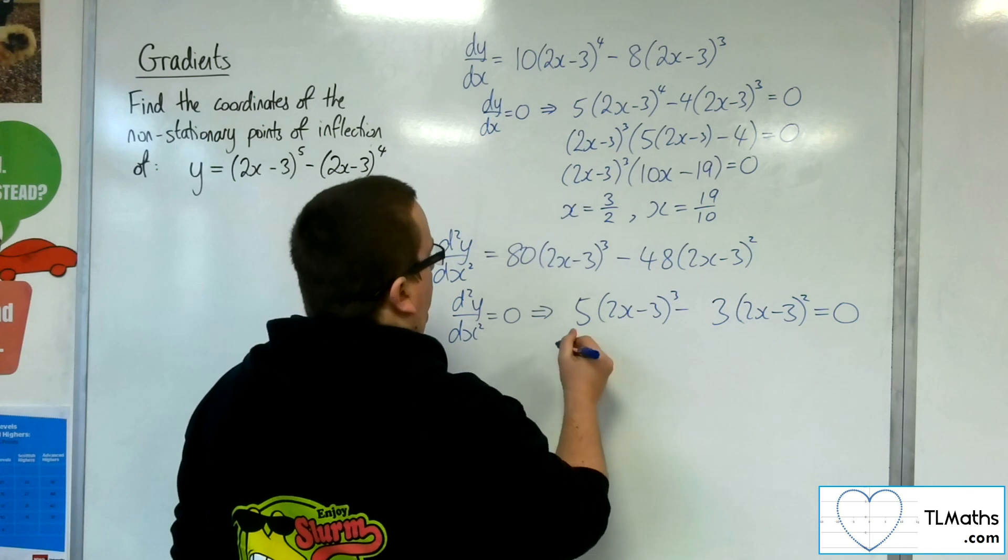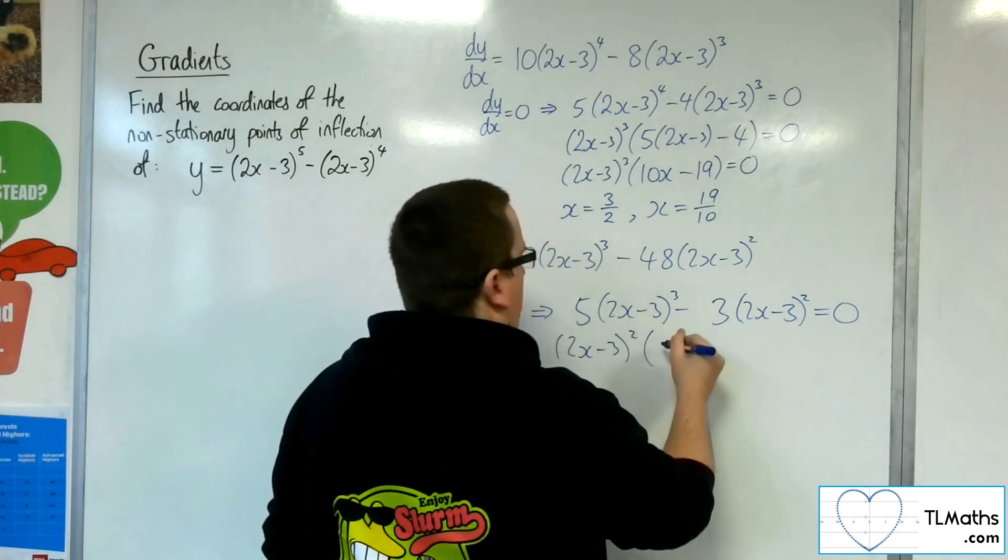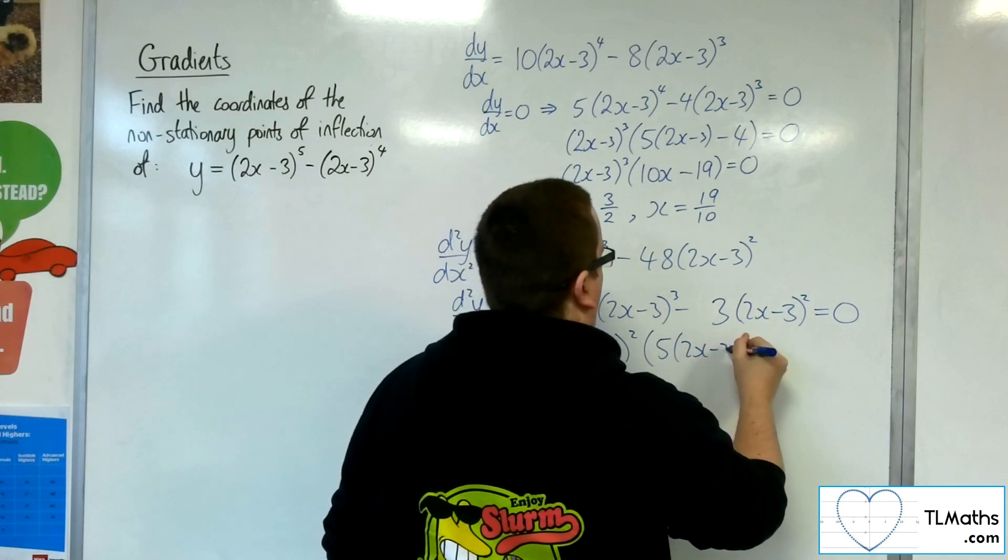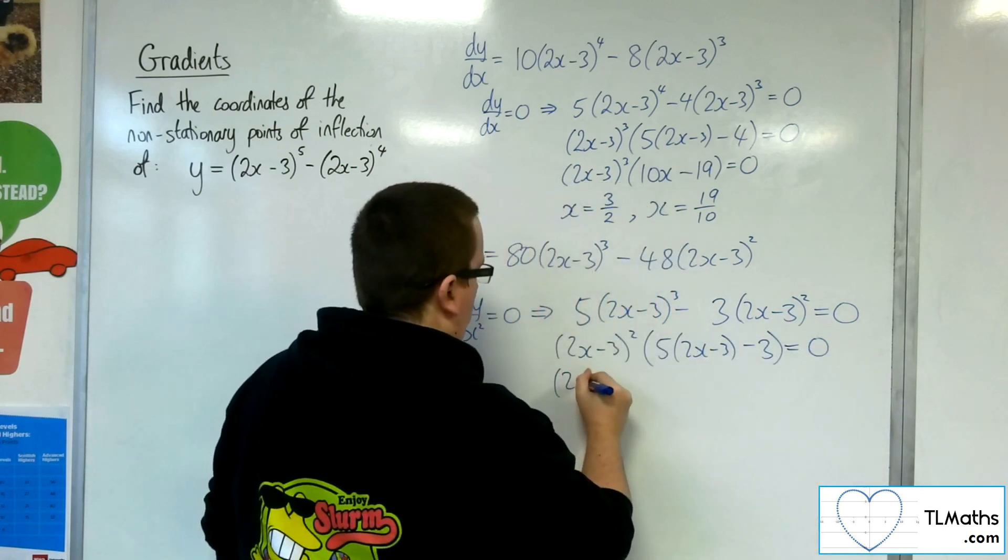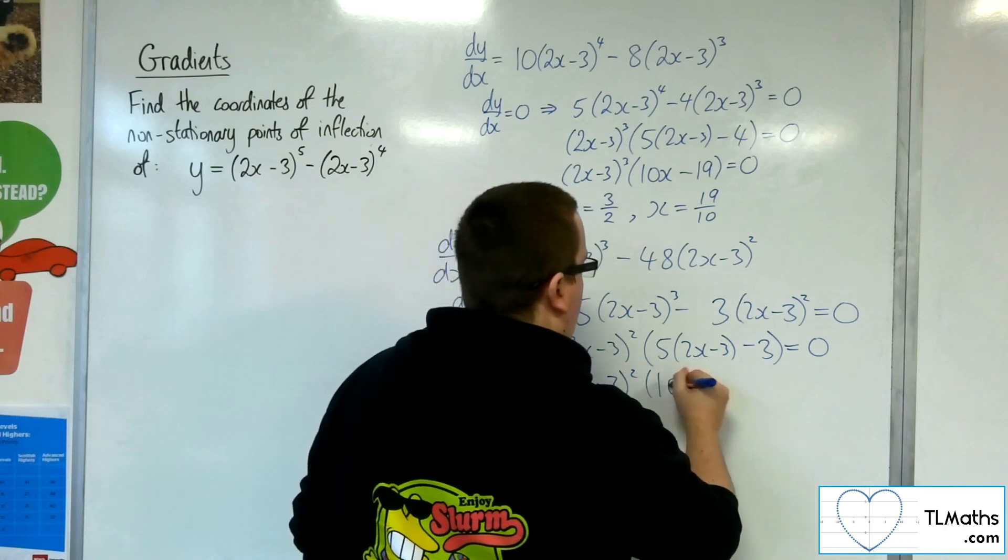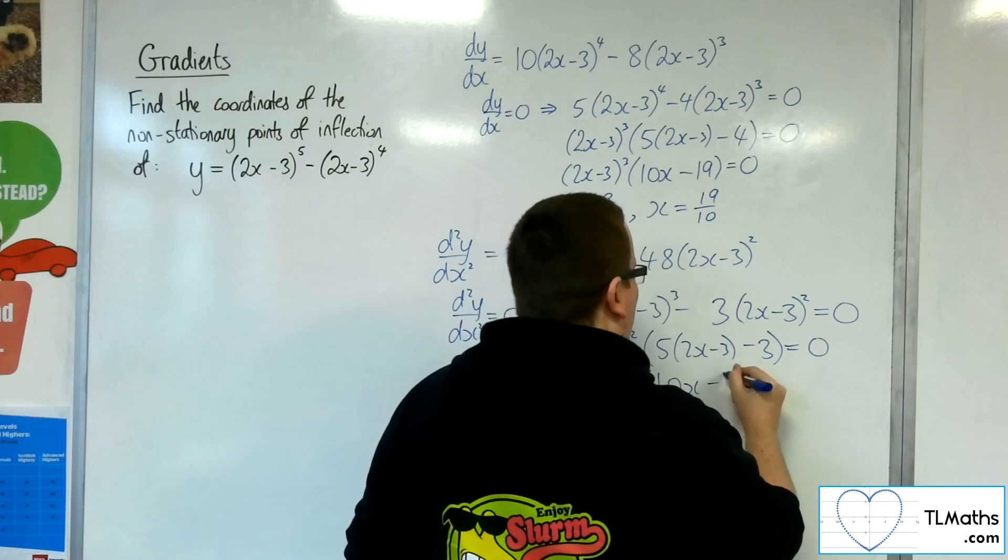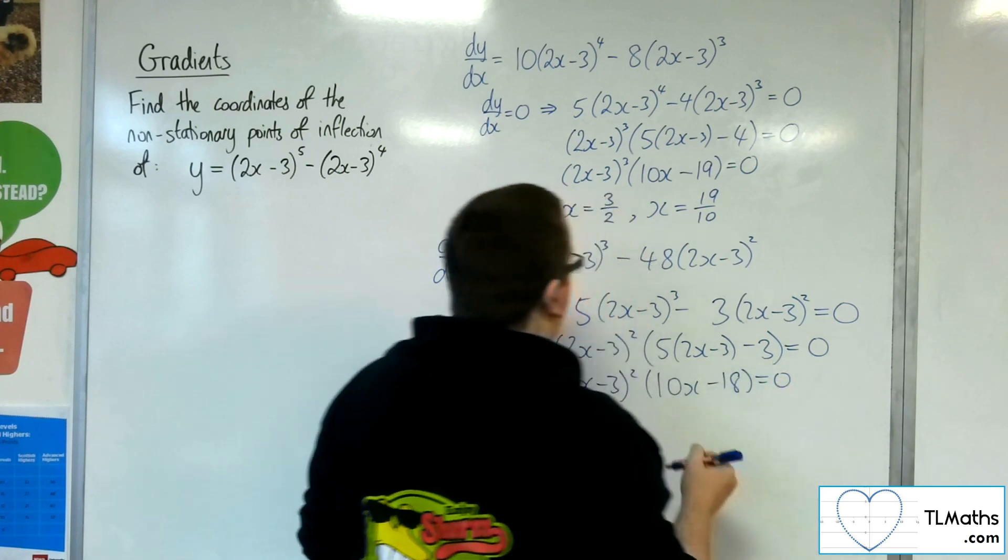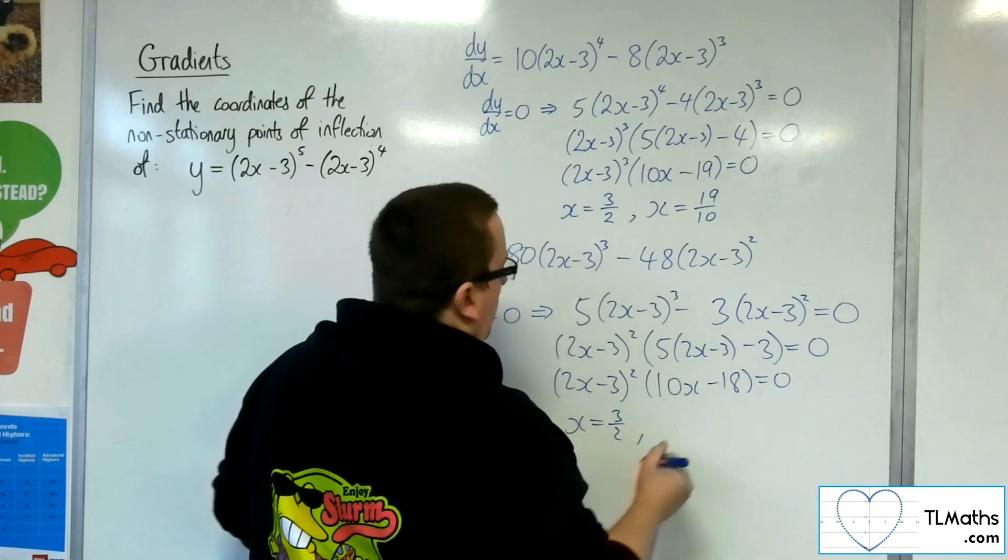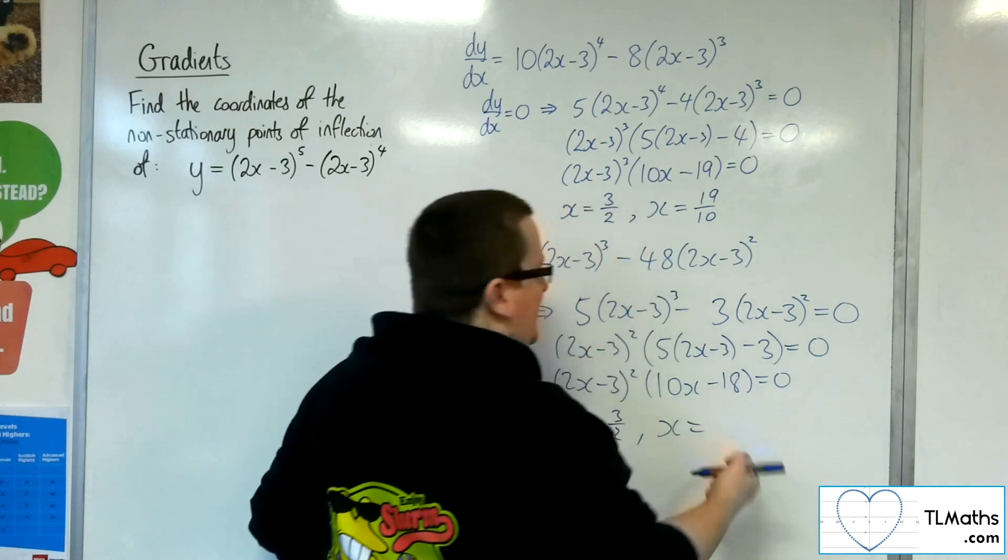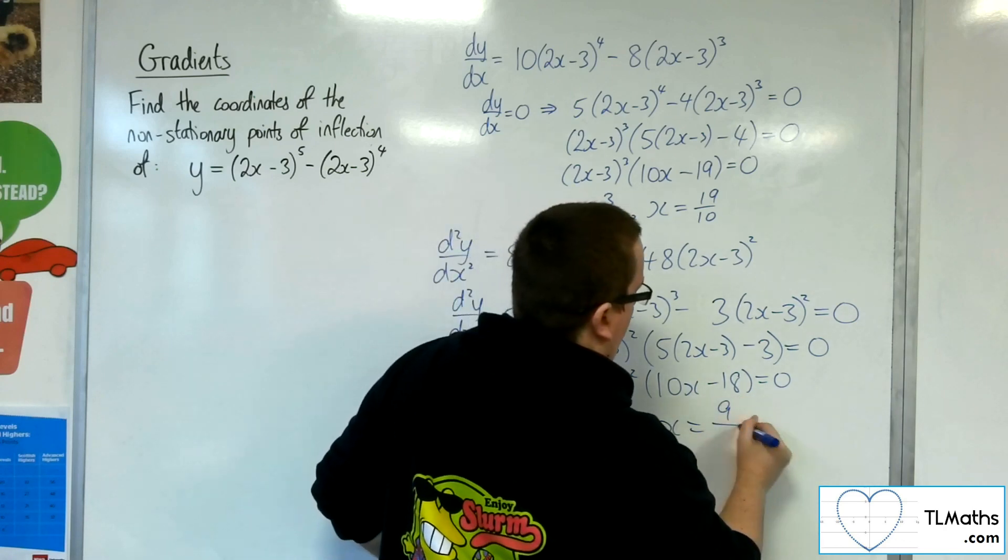Now I can factor out the 2x minus 3 squared, and I'd have 5 lots of 2x minus 3 takeaway 3 is 0. So 2x minus 3 squared, I've got 10x there, I've got minus 15 takeaway 3, so minus 18 is 0. So either x is 3 halves, or x is 18 tenths, which is 9 fifths.